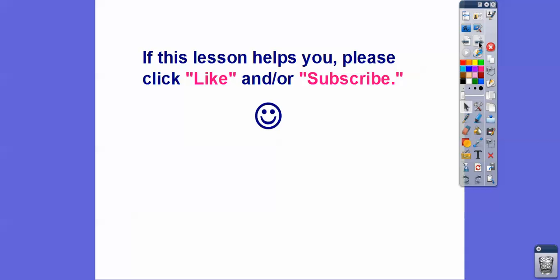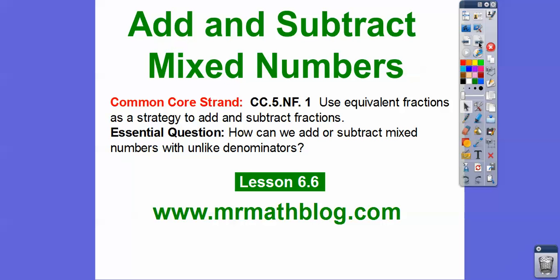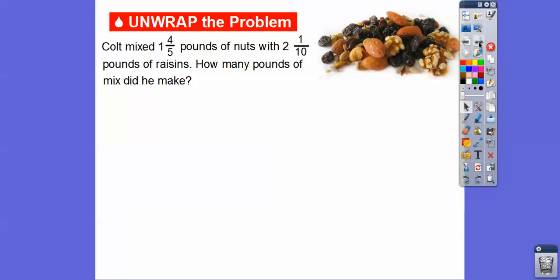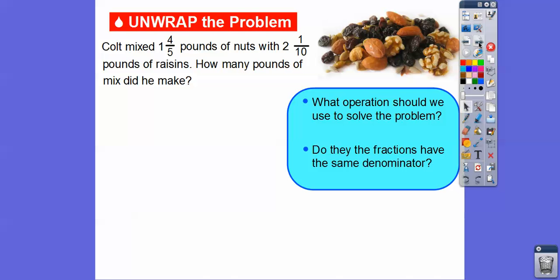And if you guys can, would you guys click like and or subscribe? And here's our common core strand for our teachers. And then our question is, how can we add or subtract mixed numbers that don't have the same denominator? So let's go ahead and get started here. Colt mixed 1 and 4 fifths pounds of nuts with 2 and 1 tenths pounds of raisins.